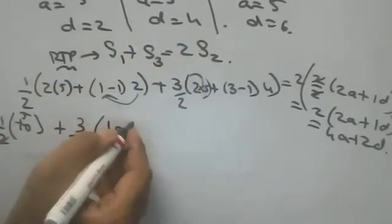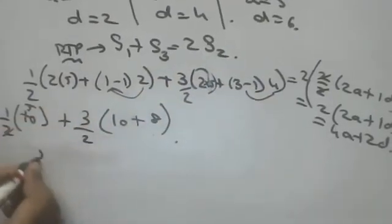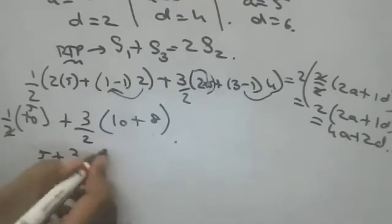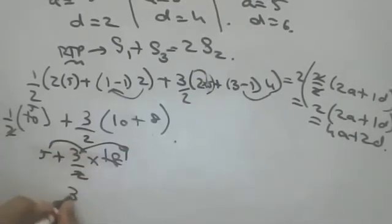So 10 plus 2 times 4 is 8. So 5 plus 3/2 into 18, so 9 times 3 is 27, 27 plus 5 is 32. Here also same.